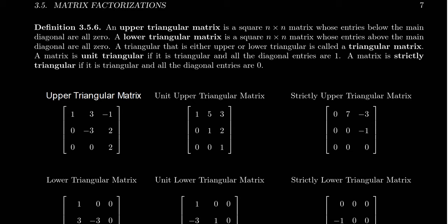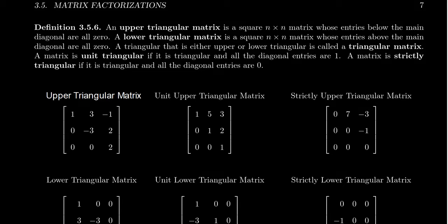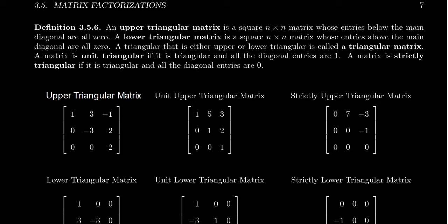The third type of elementary matrices we want to talk about is how do you upgrade a replacement matrix — how are we going to generalize that? Well, this leads to the idea of triangular matrices, and there are going to be two types of triangular matrices, which correspond to the fact that there are really two types of replacement operations we are going to talk about.